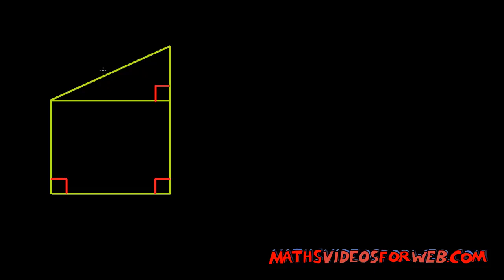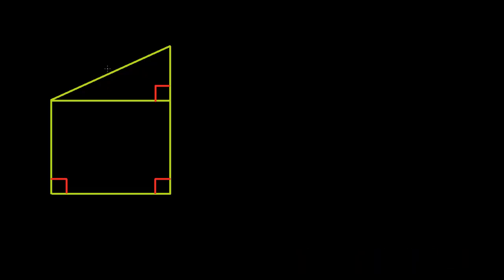Hi, in this video I'll be deriving the formula for the areas of trapeziums. Alright, let's talk about this shape over here. What we have is a right angled triangle on top of a rectangle. This angle here is 90 degrees, and this angle here is 90 degrees, and this angle here is also 90 degrees.